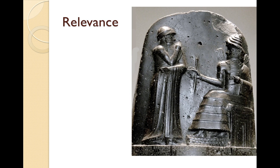These early civilizations answer questions that we still answer today: how to keep order in a society, how to organize an economy so that the needs of a community are provided for, and how to legitimize the authority of a ruler. Many of the answers these early civilizations provided 5,000 years ago have helped shape our world today. Here's a picture of the Code of Hammurabi, which had a great impact on the Judeo-Christian tradition.